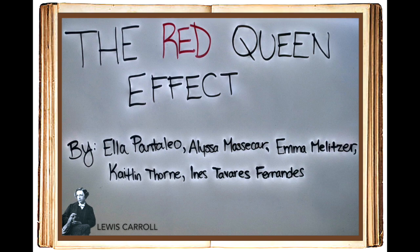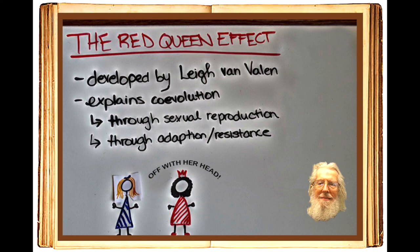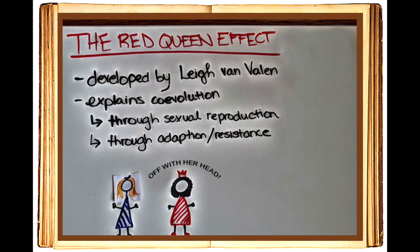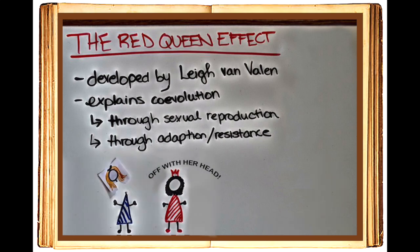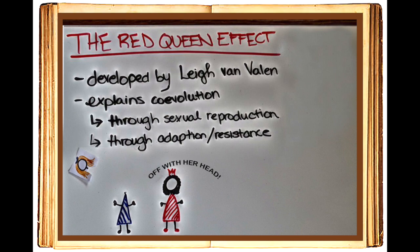The Red Queen effect plays perfectly into the subject of evolution. This hypothesis, developed by Lee Van Valen, is widely used to explain the process of co-evolution and advantages of sexual reproduction.